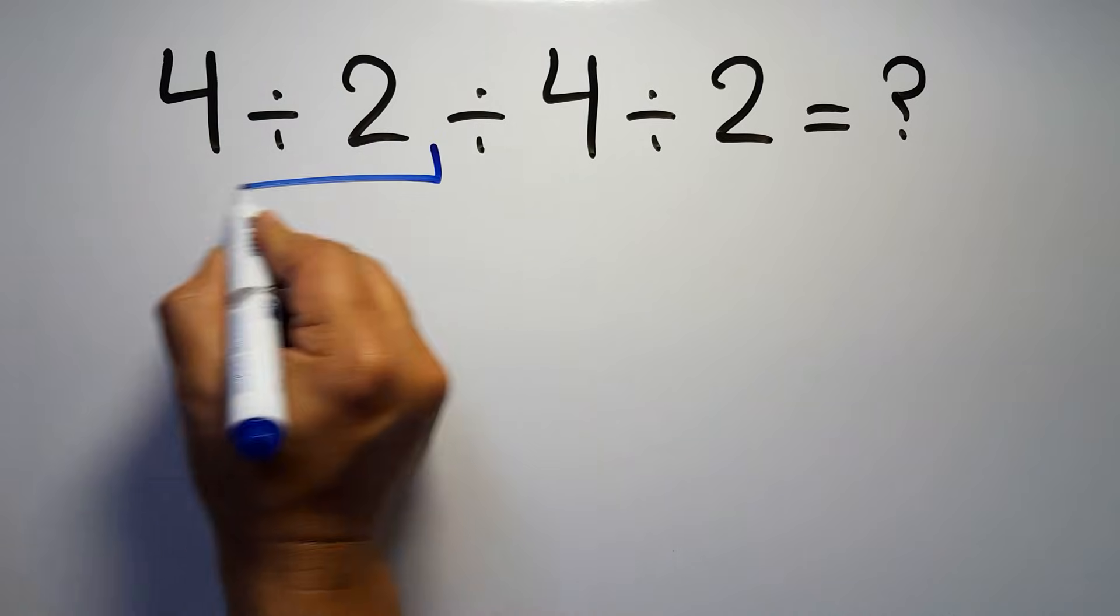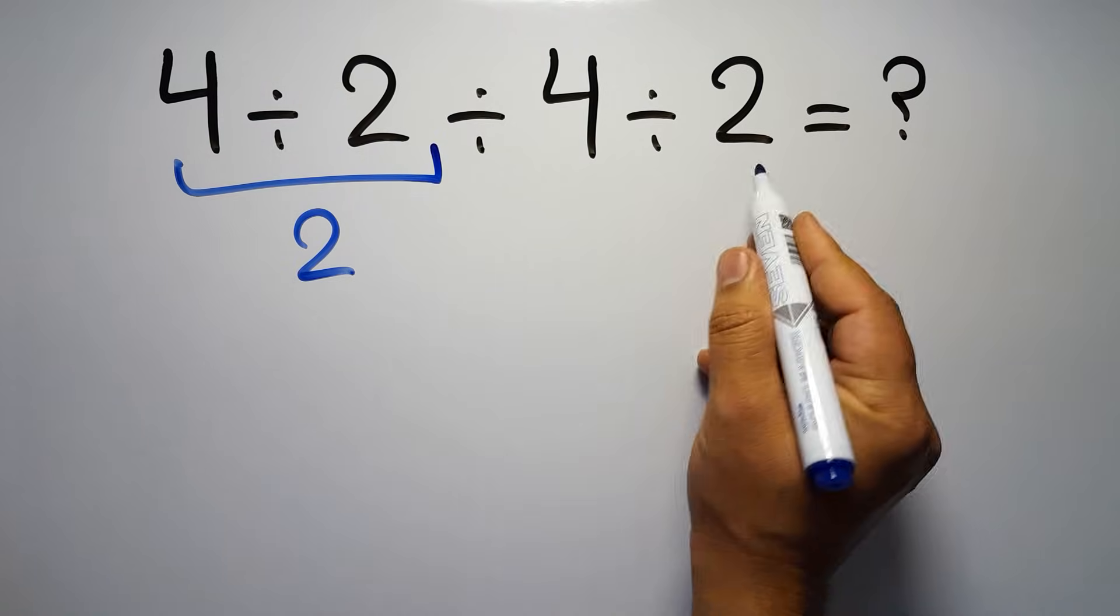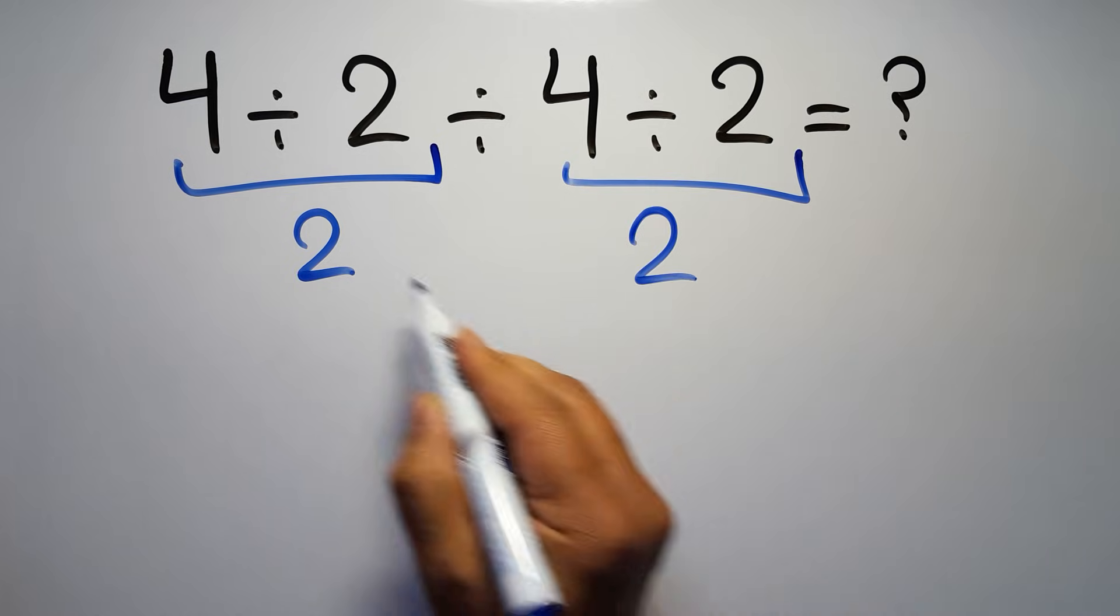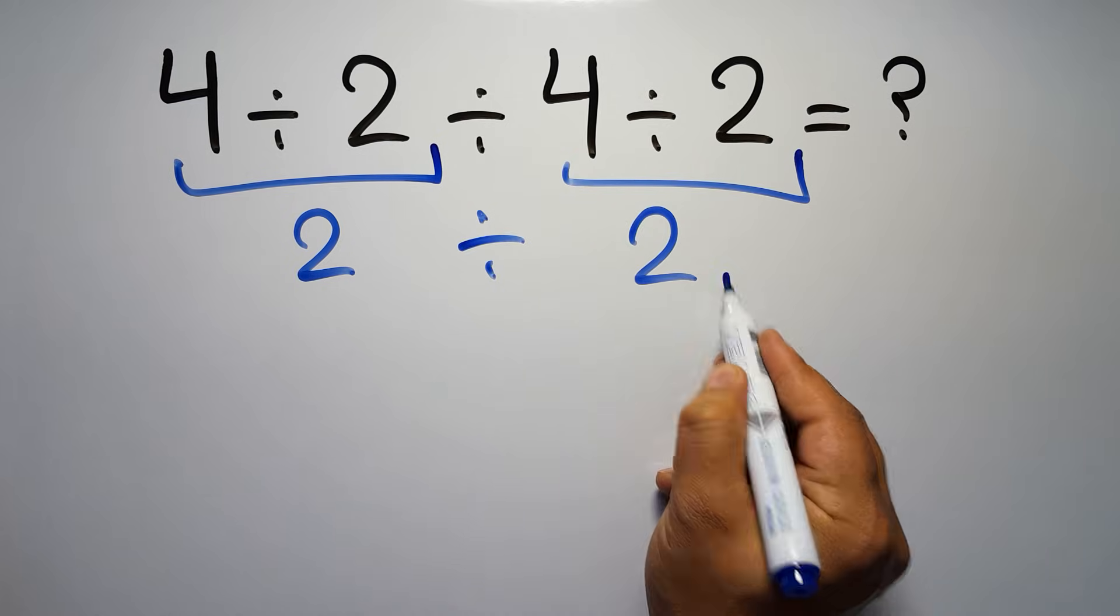4 divided by 2 gives us 2, and again here we have 4 divided by 2, so 2 divided by 2 is just 1.